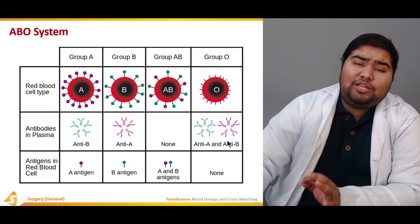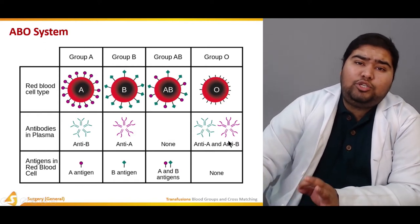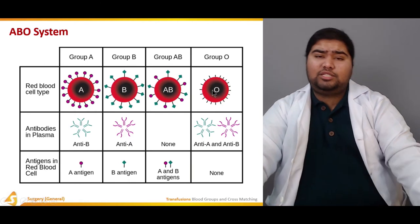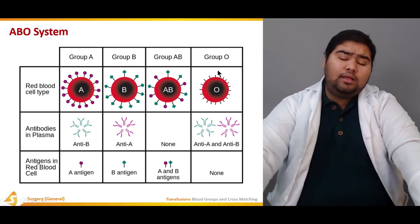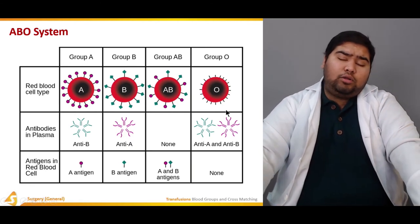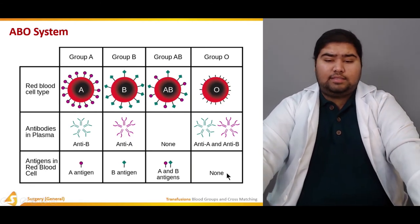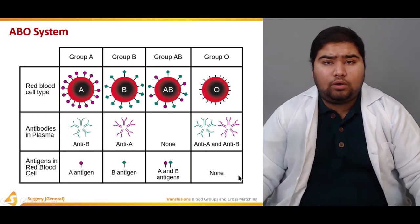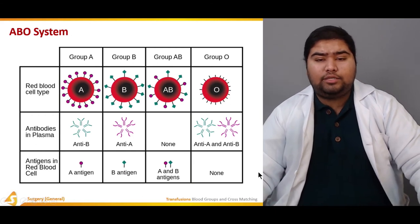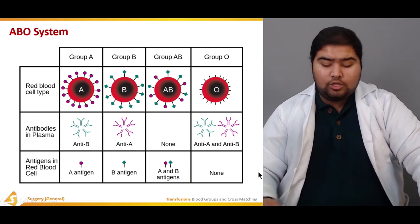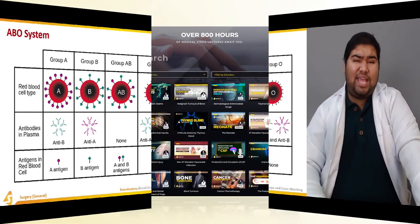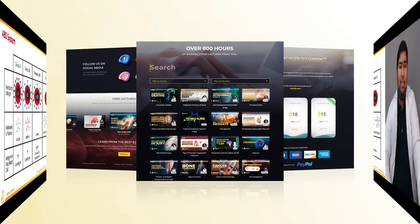Blood group O individuals are universal donors because there are no antigens on their cells, so they can donate to all blood groups. This is a brief summary of the ABO blood type system.